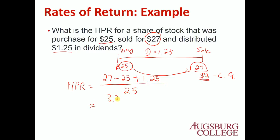That gives us $3.25 divided by $25, which equals 13%. So you make a 13% return on your investment. That's how to compute the Holding Period Return.